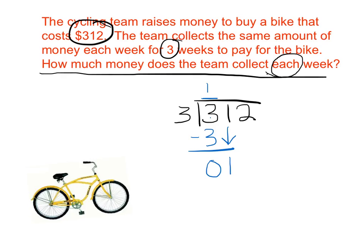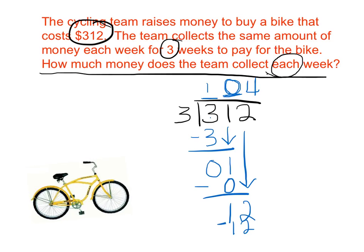Because 3 cannot go into 1, I can't just leave the tens place empty. I have to fill it in with something, and because it goes into it zero times, I'm going to fill it in with a zero. Then I'm going to multiply — 3 times zero is zero. Subtract — that gives me 1. Bring down. Now I have 12. 3 goes into 12 four times. Multiply — that gives me 12. If I subtract, that gives me zero left over. My quotient is 104.